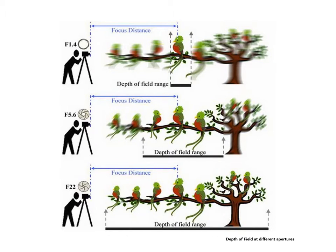This chart gives you an idea of the difference in depth of field between different apertures. As you can see, the first figure shows f1.4, which suggests a very fast lens but also gives you a very shallow depth of field. At f5.6 you get more, and with f22 you get a great deal — perhaps everything in front of your camera in focus.